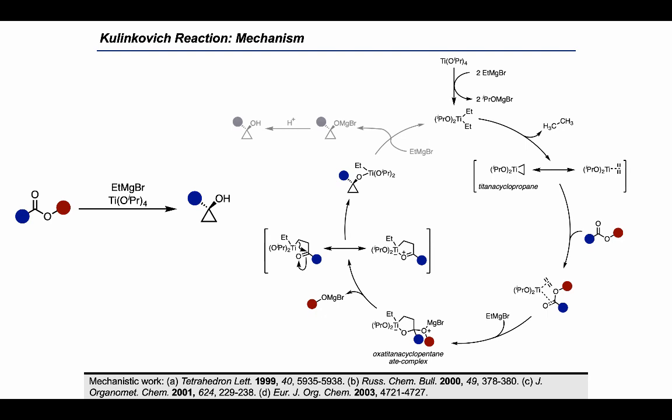Finally, we can have a ligand exchange, where another equivalent of ethylmagnesium bromide is used to liberate a cyclopropyl alkoxide, which can form a cyclopropanol product on workup. This step also results in the regeneration of the dialkyl-dialkoxy-titanium species that we started the cycle with.